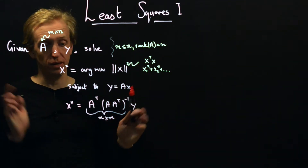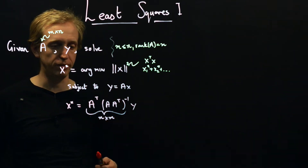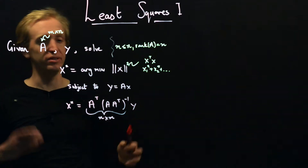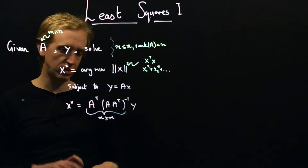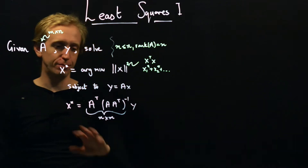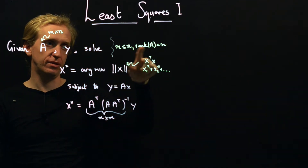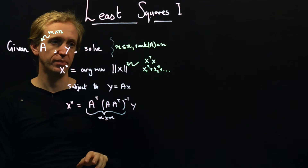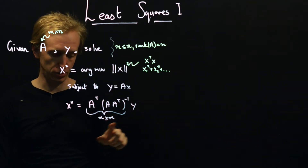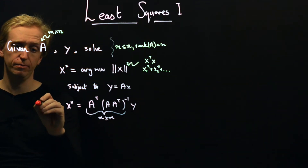There's a generalization — what's called the Moore-Penrose pseudoinverse — that we can use if the full rank condition isn't satisfied, but let's not get into that. Under the assumption that matrix A has full rank, this is the analytical solution.